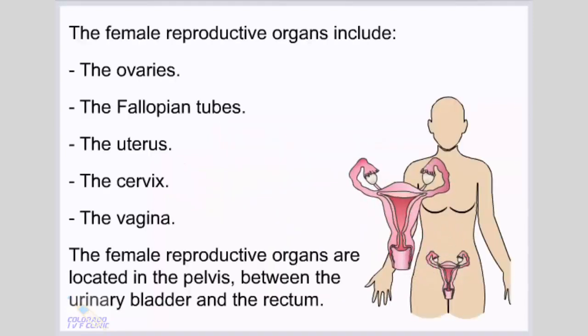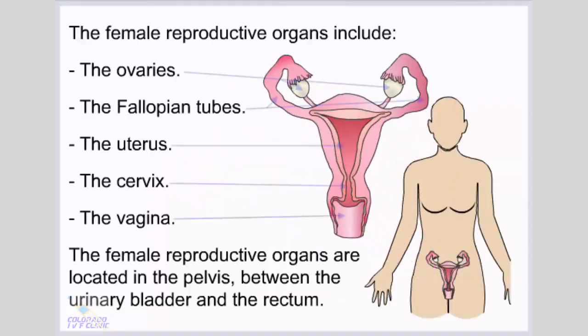The female reproductive organs include the ovaries, the fallopian tubes, the uterus, the cervix, and the vagina. The female reproductive organs are located in the pelvis between the urinary bladder and the rectum.